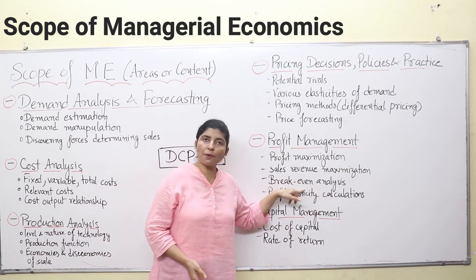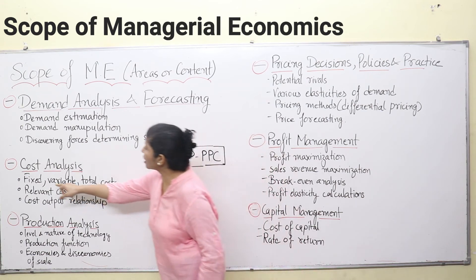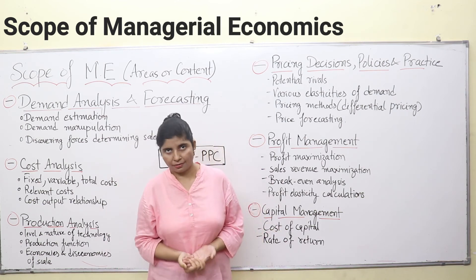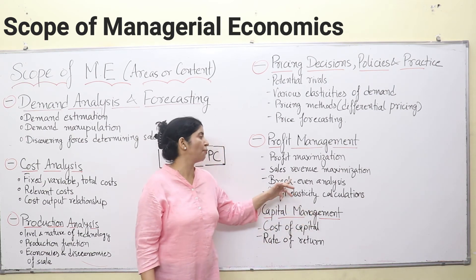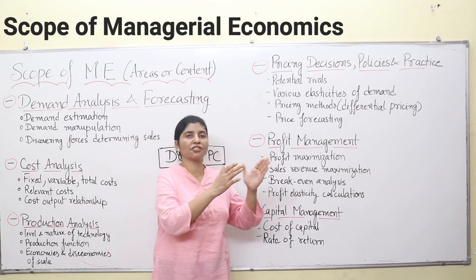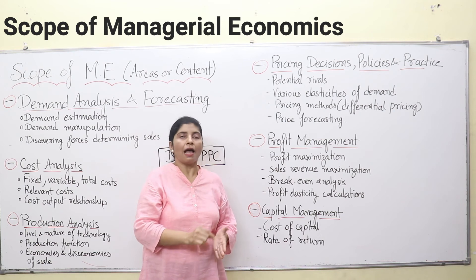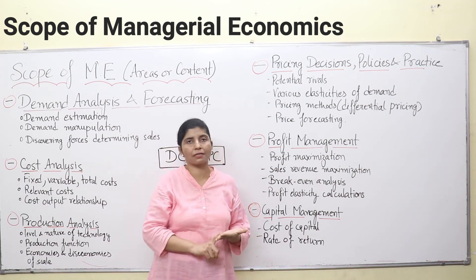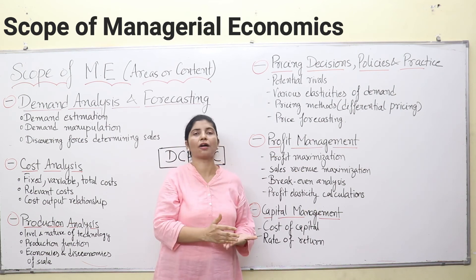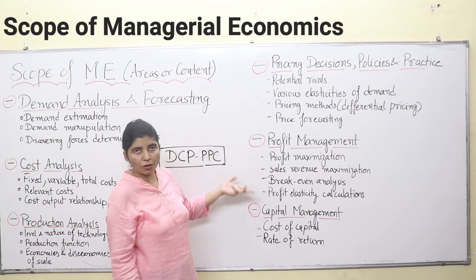Then, break-even analysis. Break-even is the point where you cover all your costs — that is, the summation of your fixed cost and variable cost. At this point in your business, you have started earning pure net profits. For example, if I have a bakery and operated it for one year, investing 10 lakh rupees in machinery, plant, and raw material, and after one year I am able to cover all my costs of 10 lakh rupees plus the cost of all raw material — that point where I cover all total costs is the break-even point. This is break-even analysis.